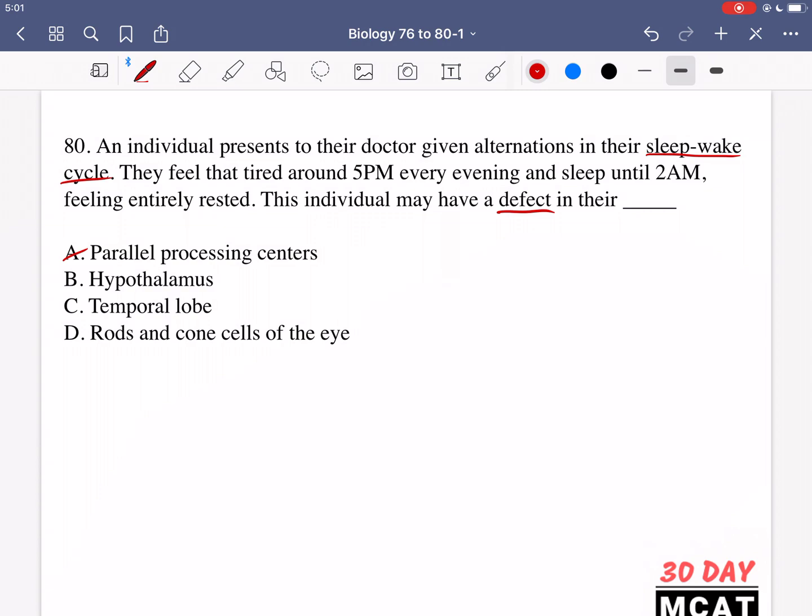Option B is the hypothalamus. And this part of the brain is involved in many different things, like controlling hunger is one of them. And it is also involved in controlling the sleep-wake cycle. The hypothalamus, it contains the suprachiasmatic nucleus, which is responsible for the circadian rhythm. And therefore, that's related to sleep-wake cycles. So, B is our correct answer.